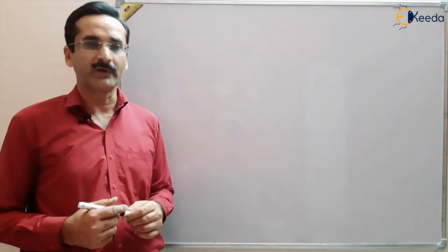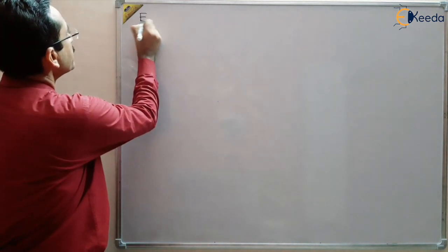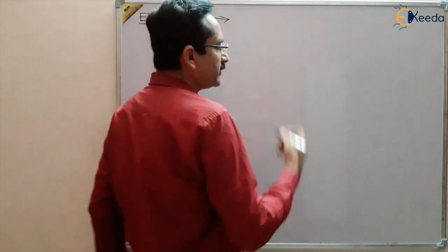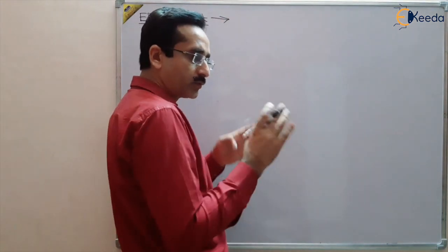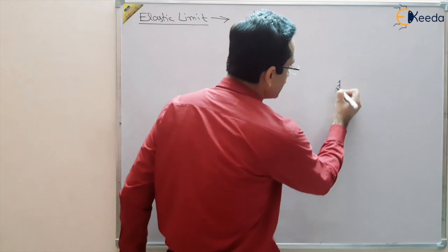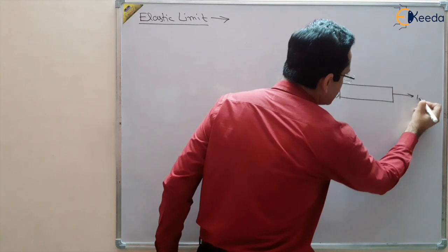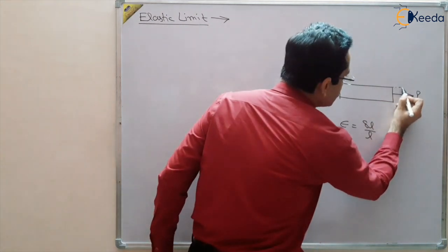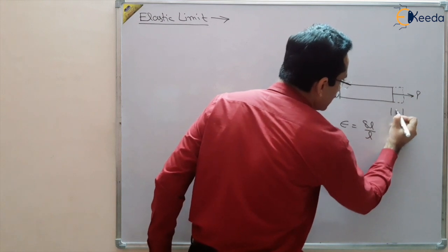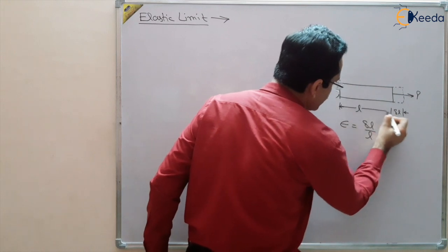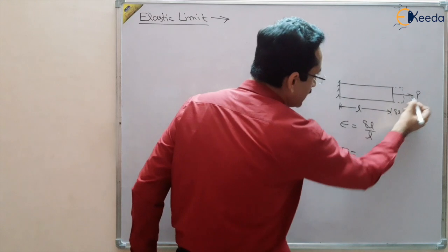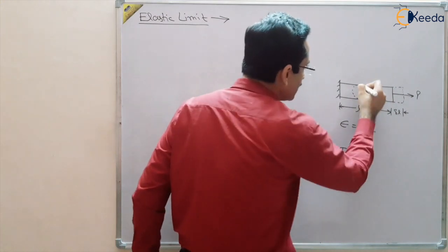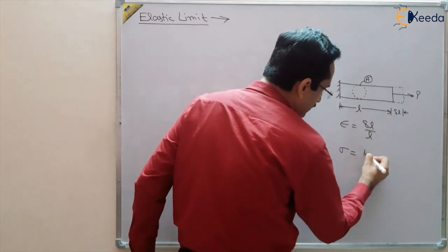Let us first define what is elastic limit. As we know, stress and strain are two important terms. Whenever we have a deformation in the bar, the strain is given by delta L upon L — change in length upon original length — where delta L is the deformation and L is the original length of the bar. Stress is given by force per unit area; the bar may have a circular or rectangular area of cross section.